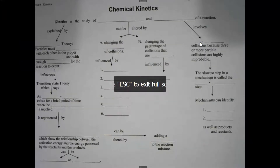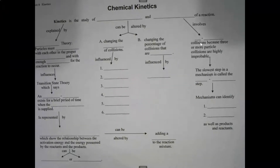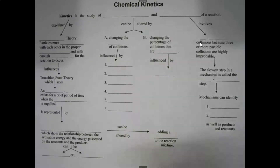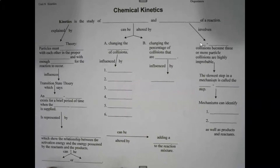We are going to be starting Unit 9, which is chemical kinetics. This is page 903 in your binder, so go ahead and pull that out. When we finish this organizer, we will be finished with the unit. Unit 9 is all about something called chemical kinetics, so what is kinetics?